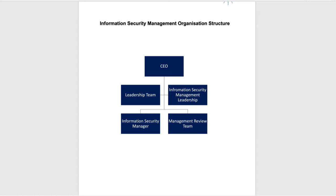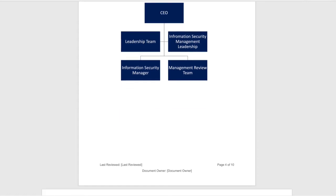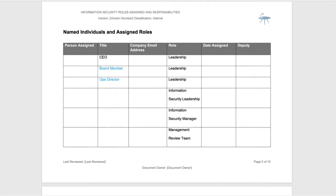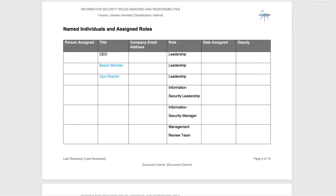As a standard, the pre-populated structure works well. We have named individuals and assigned roles — this is the area for you to complete. Here you need the person assigned, their title, company email address (in line with GDPR and data protection and your own internal policies), the role that they're completing, and the date that they were assigned.